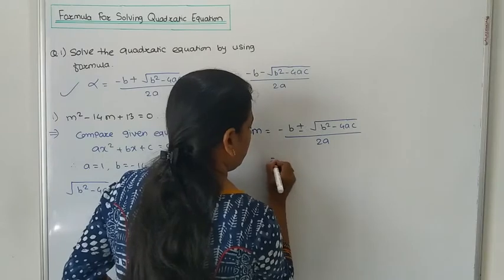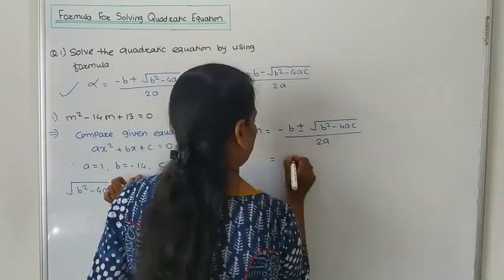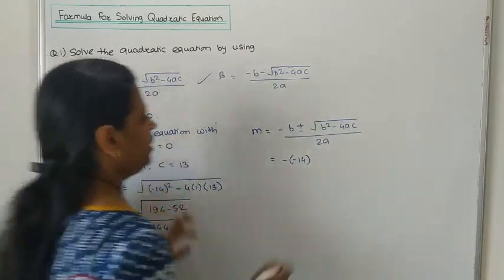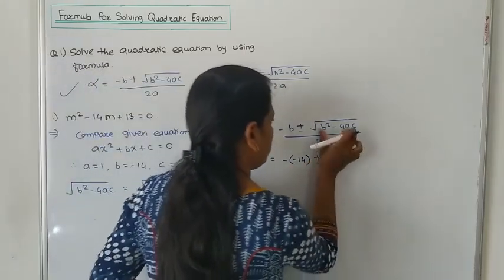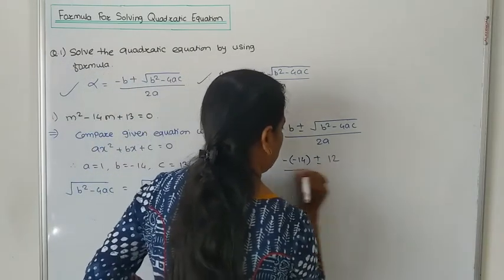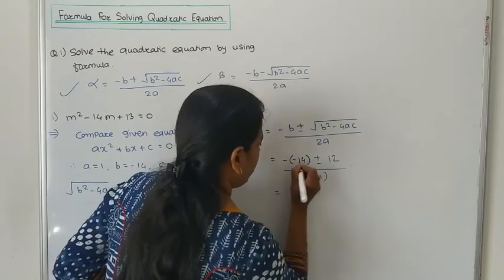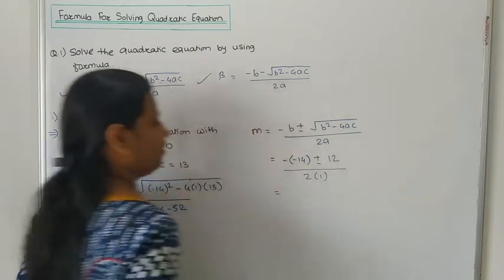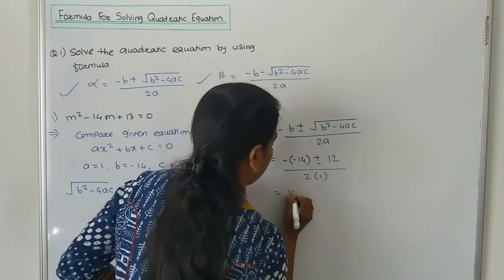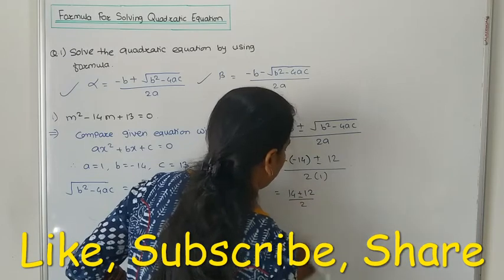The value of B is -14, so -B = 14. Plus or minus 12, divided by 2·1. So M = (14 + 12)/2 or M = (14 - 12)/2.